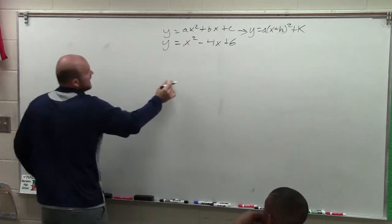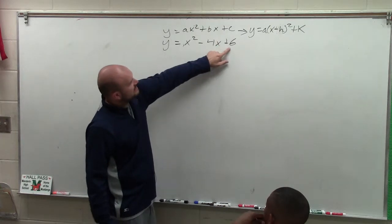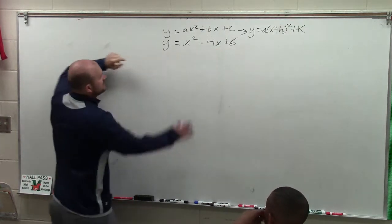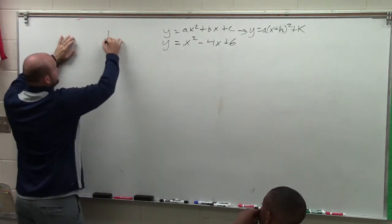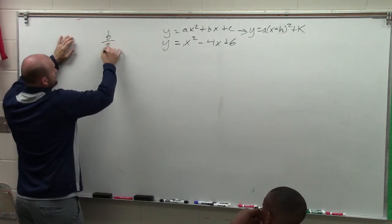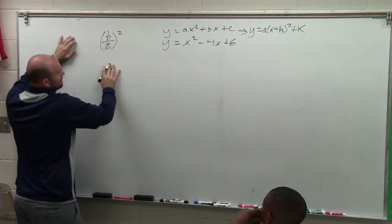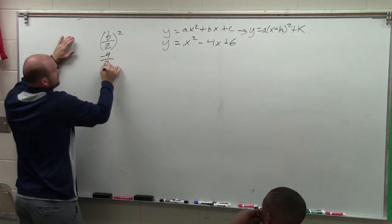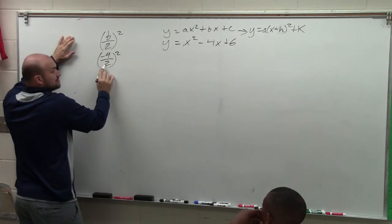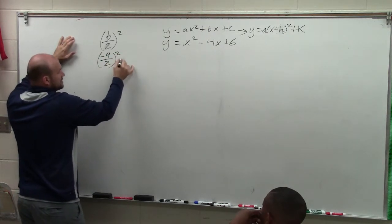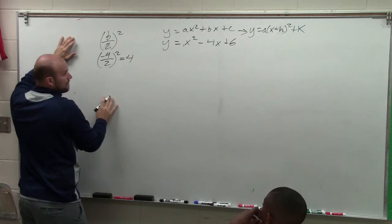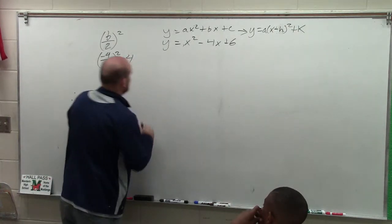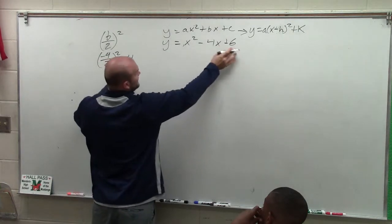The next case is now we need to create a value that's going to make this a perfect square. 6 does not make this a perfect square. So to find the value that's going to make this a perfect square, what we do is we take b divided by 2 and square it. So b, in this case, is negative 4. It's negative 4 divided by 2 and square it. Negative 4 divided by 2 is negative 2. Negative 2 squared is equal to 4.